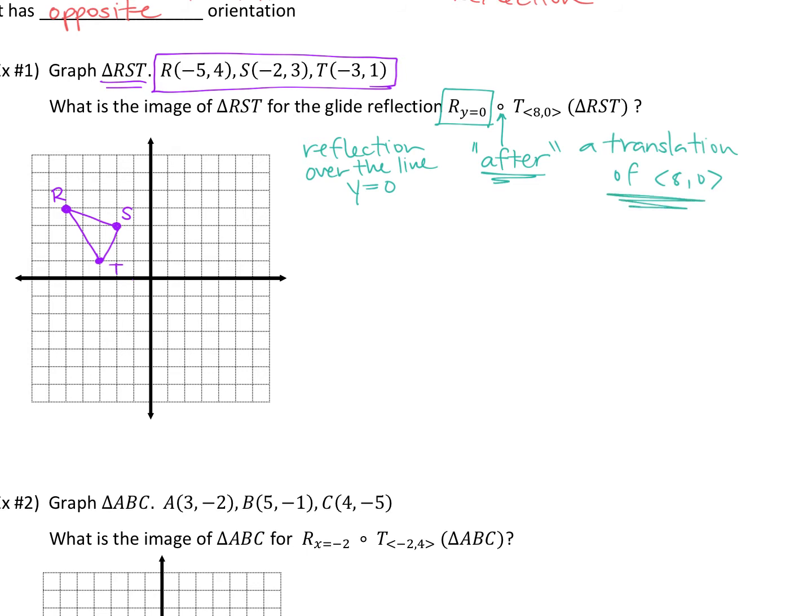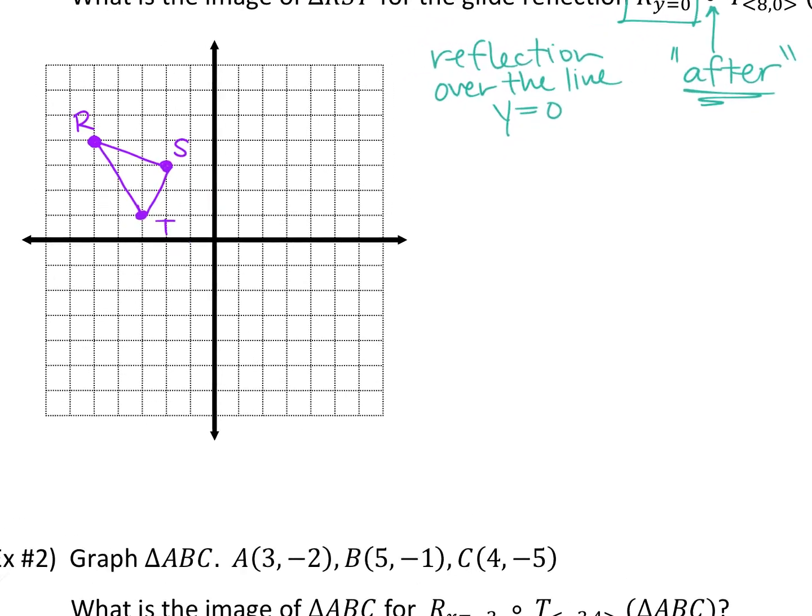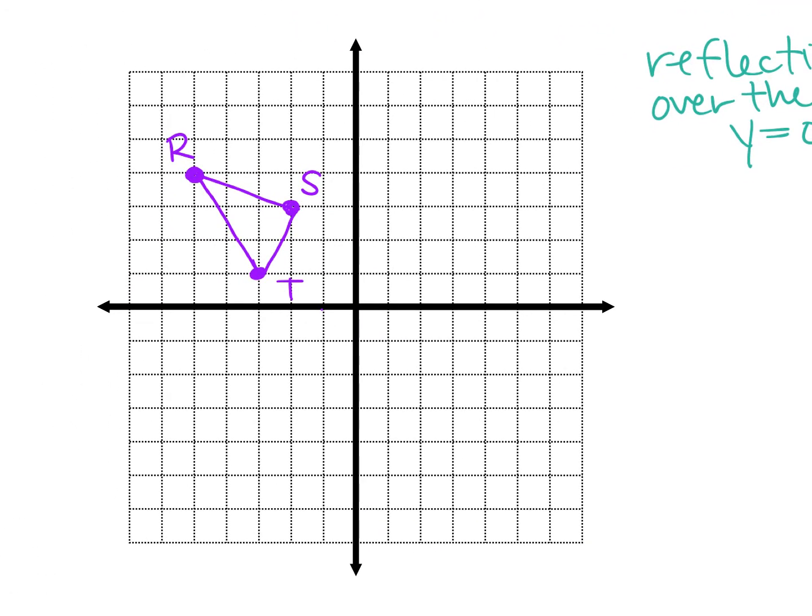So we're going to start with a translation of eight zero. Where does that move us? Eight to the right. So here's what you're going to do. From RST, from R, we're going to just do R first. One, two, three, four, five, six, seven, eight. And I'm not going to call it R prime yet because we're not done. S, one, two, three, four, five, six, seven, eight is here. And then T, one, two, three, four, five, six, seven, eight is here.